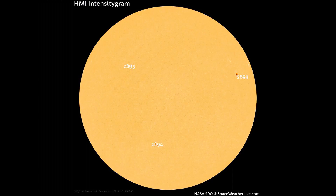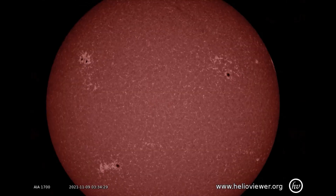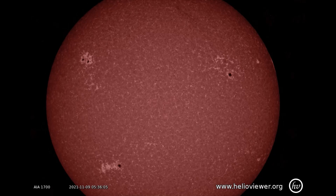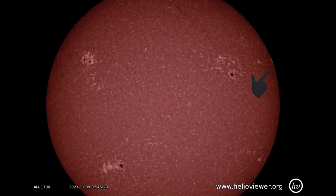On this HMI intensity gram map, three sunspot regions are observed on the Earth-facing side of the Sun. Region 2894 is Earth-facing at this time. On this SD017U filter, the area where the M-class flare erupted is just here.